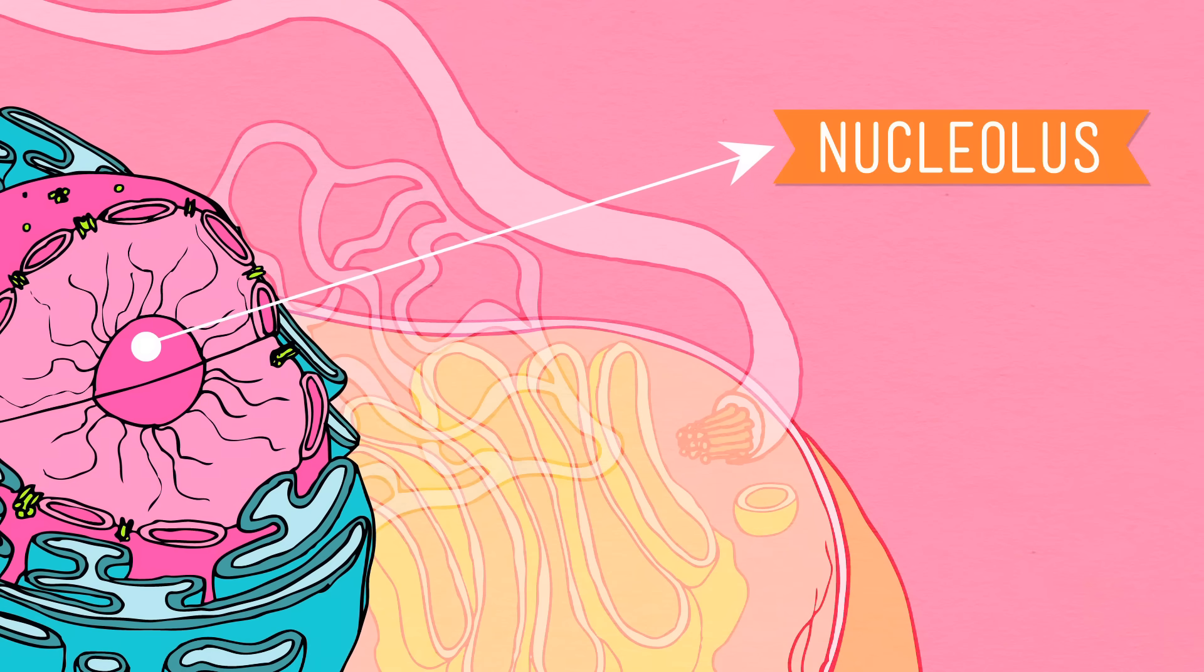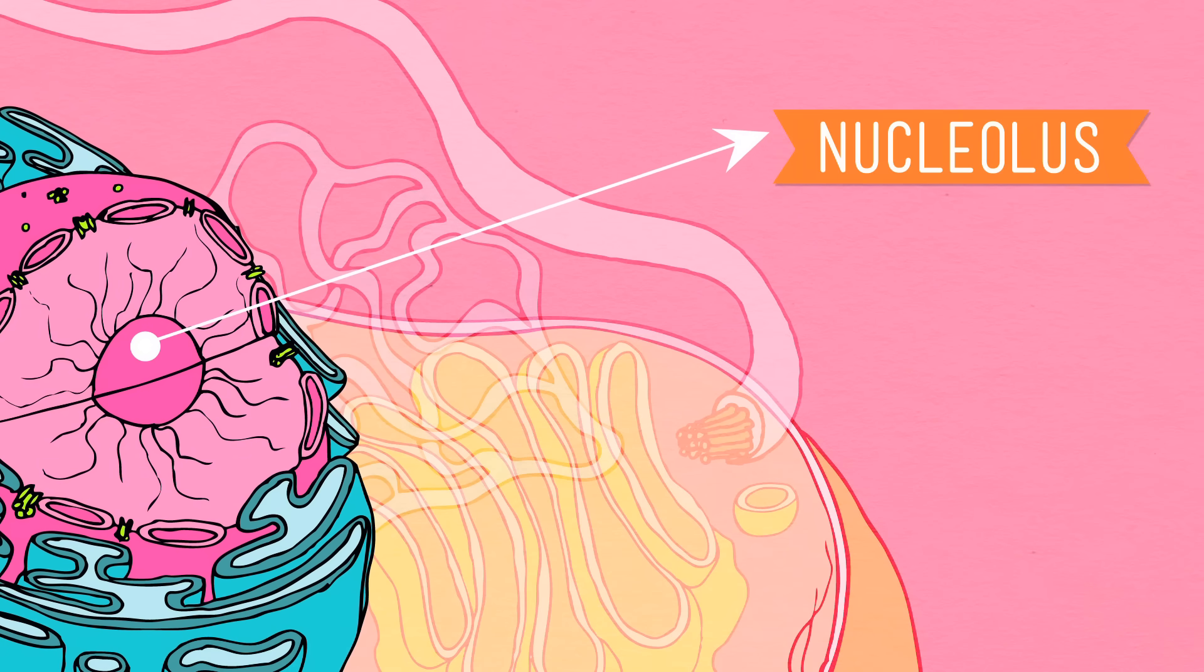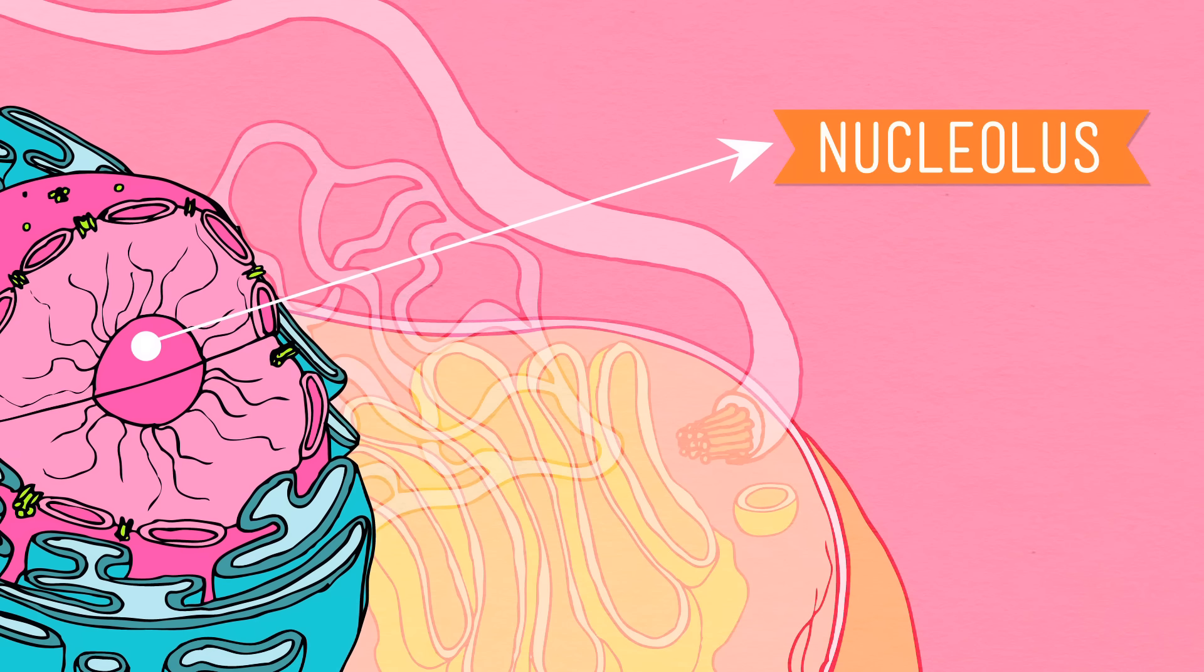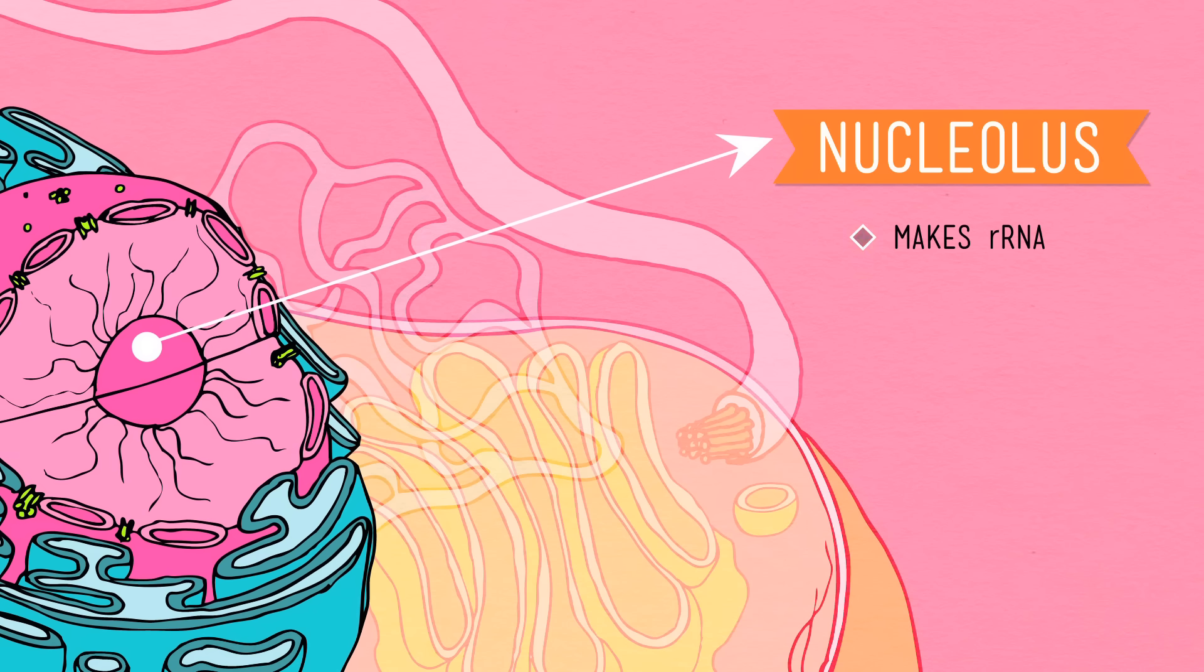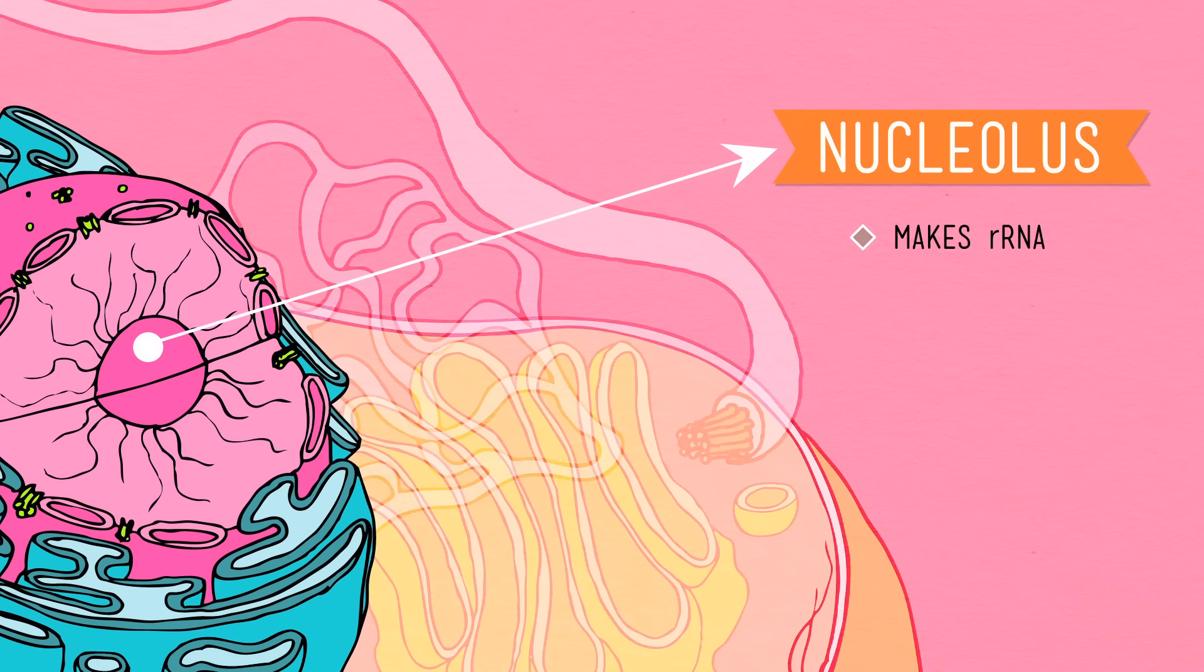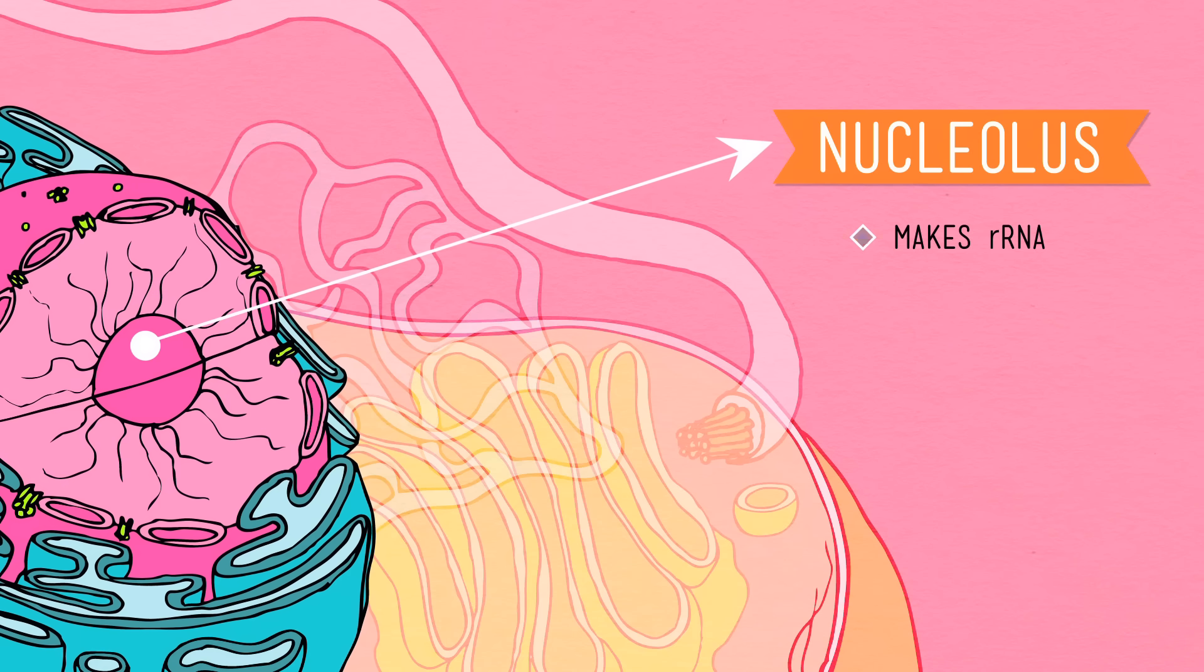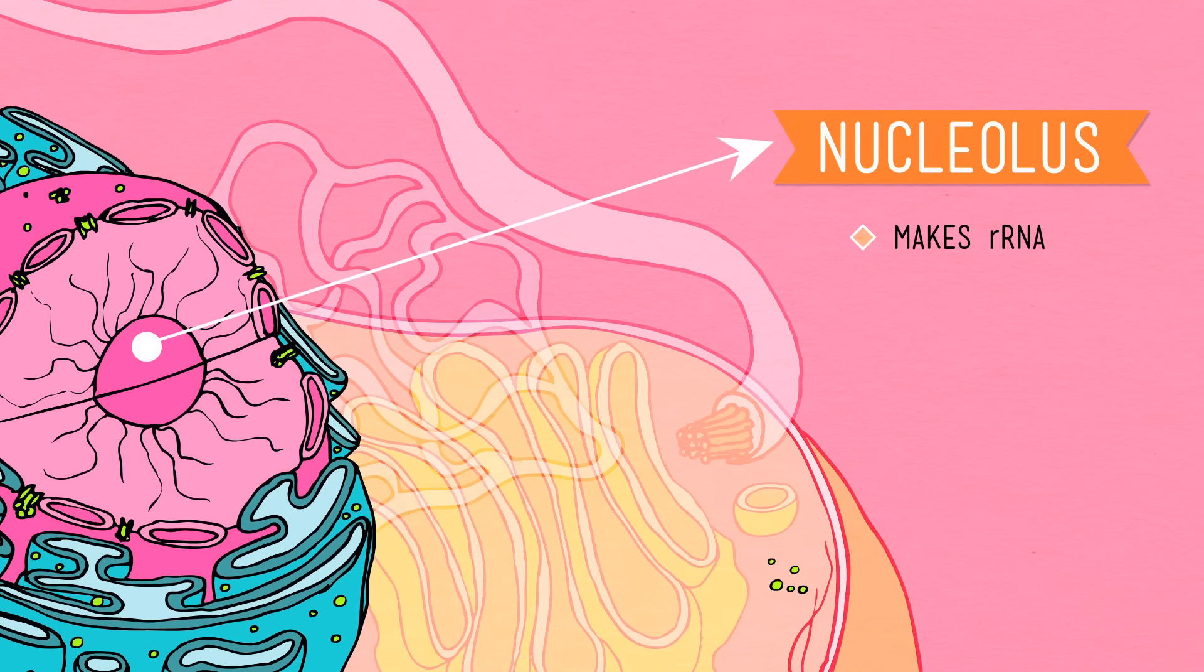Now, the nucleolus, which lives inside of the nucleus, is the only organelle not enveloped by its own membrane. It's just a gooey splotch of stuff within the nucleus. Its main job is creating ribosomal RNA, or rRNA, which it then combines with some proteins to form the basic units of ribosomes. Once these units are done, the nucleolus spits them out of the nuclear envelope, where they are fully assembled into ribosomes.